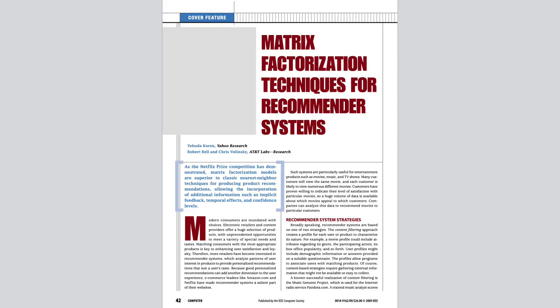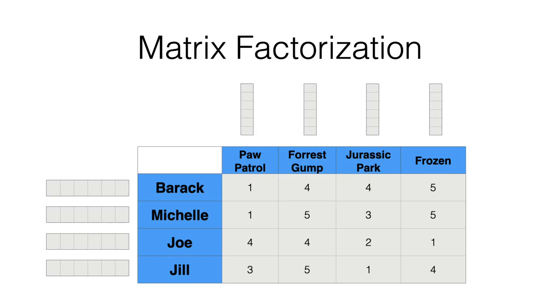Let's talk about the algorithm. This is a paper on matrix factorization techniques by Yehuda Koren, Robert Bell, and Chris Volinsky — some of the members of that winning team. The algorithm is called matrix factorization. A matrix is essentially a 2D table of numbers, and the idea is to think of the ratings or interactions people provide as entries in that table.